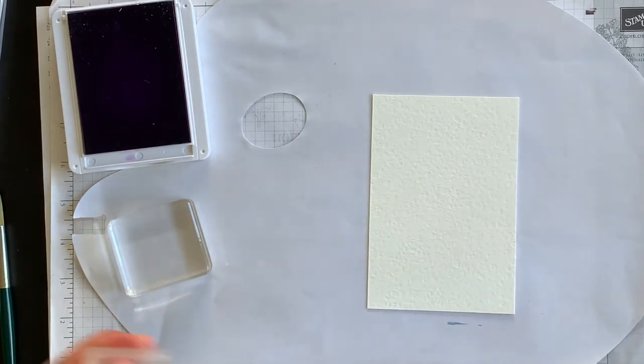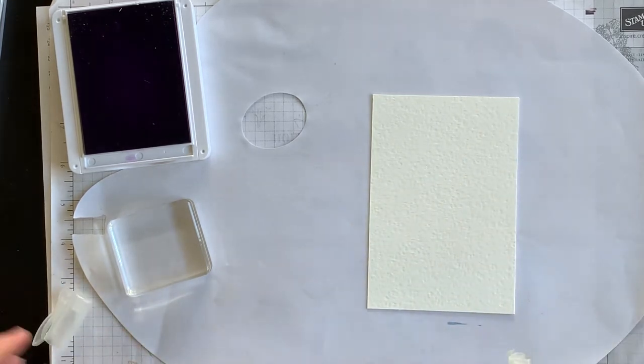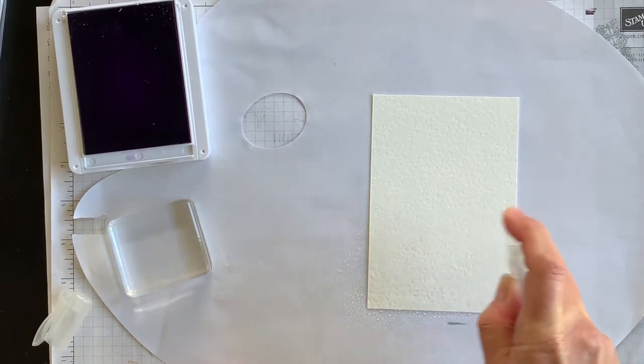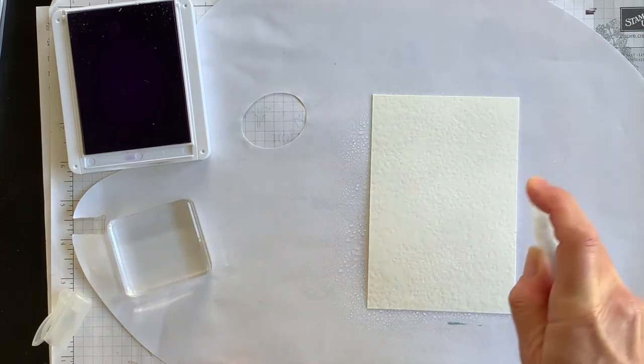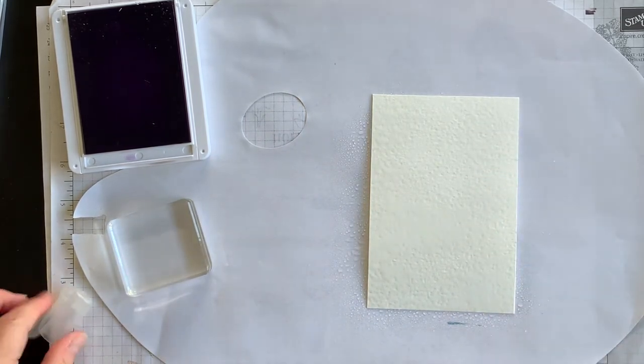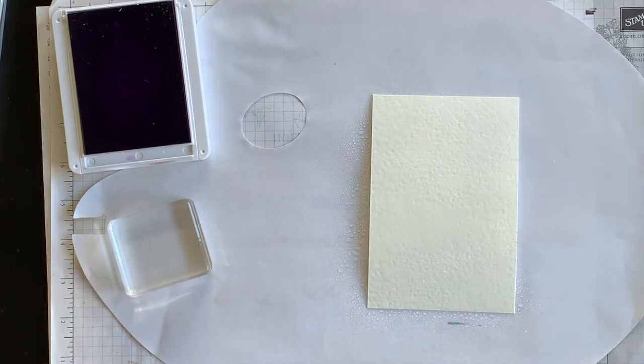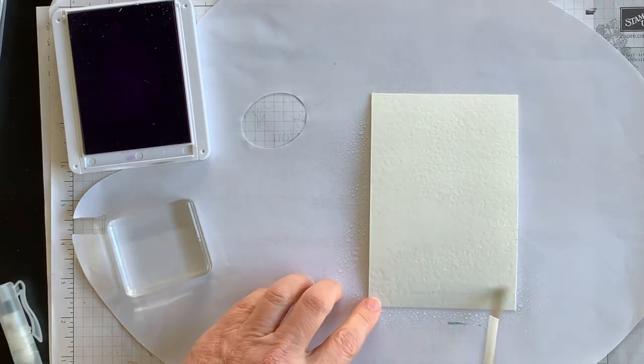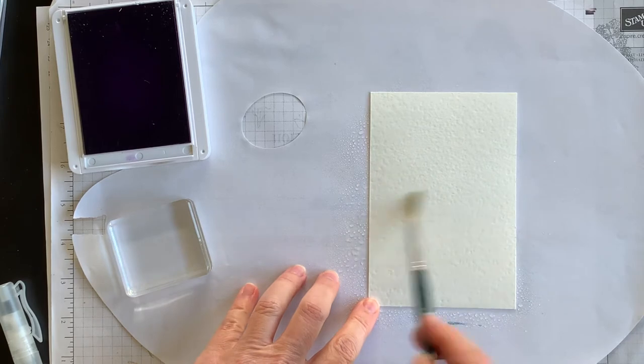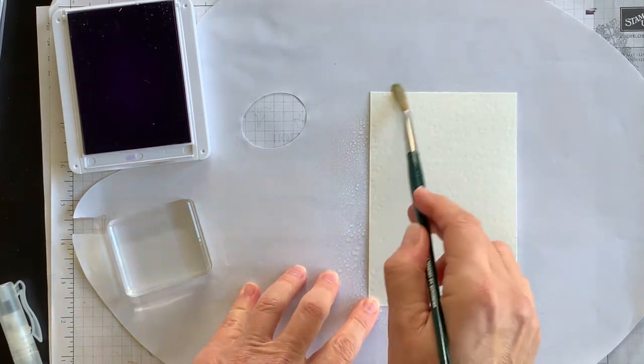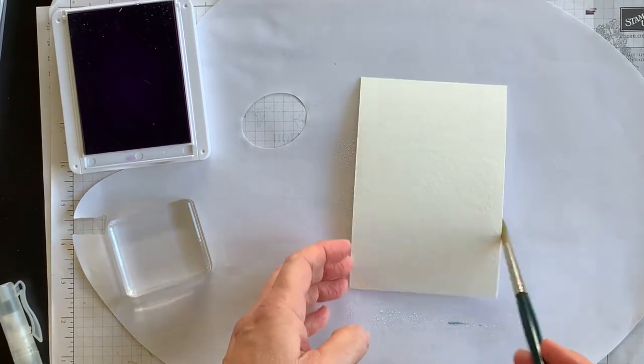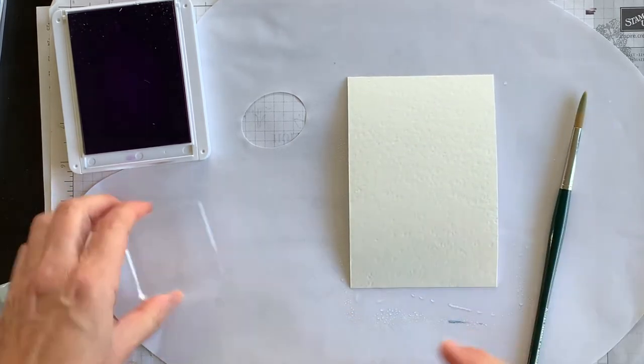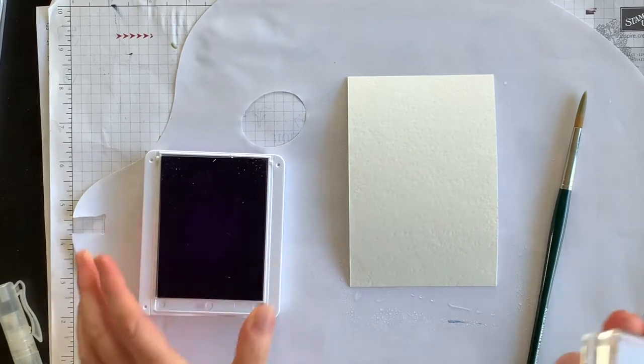All right, so here's what you're going to do. The first thing you're going to do is spritz water across the whole watercolor paper layer. It's going to curl up a little bit when it's wet, don't worry about that. Then I'm going to take my paintbrush and I'm going to make sure that it's really saturated all over the place.